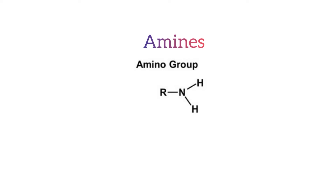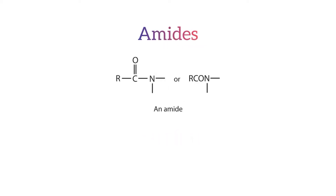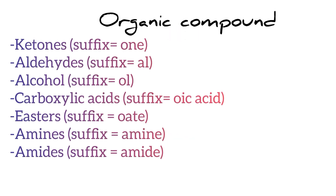Amines are a class of organic compound that contains the amino functional group and their names include the suffix '-amine'. Amides are a class of organic compound derived from carboxylic acids. Amides contain a carbonyl functional group attached to an amine group, therefore the suffix is '-amide'. Keep this information in mind because you will need it for the following examples. Note that examples will be drawn in linear structure, which means every joining peak represents a carbon atom.